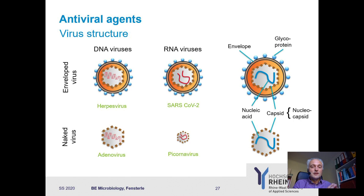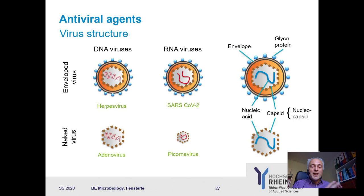Bacteria have many things which differ from eukaryotic cells — different metabolism, different cell structure. Antibiotics attack different aspects of bacterial synthesis. Penicillin targets cell wall synthesis, and the major part of clinically relevant bacteria have a cell wall. So the cool thing is that penicillin, or ampicillin derivatives which also work in gram negatives, work for a vast array of bacteria.